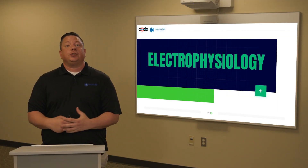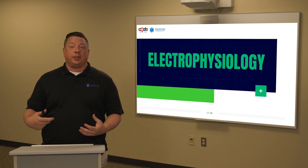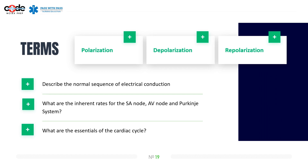As we start into electrophysiology, you guys know EKGs only read electric. Now we're going to start understanding some concepts you need to know to answer NCLEX questions. A few terms we need to talk about are polarization, depolarization, and repolarization. We want to describe the normal sequence of electrical conduction, what the electrical conduction pathway is, what the inherent rates are for each part of your heart, and what are the essentials of the cardiac cycle — those waveforms.